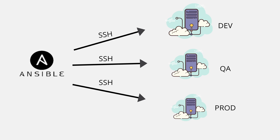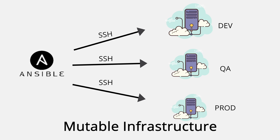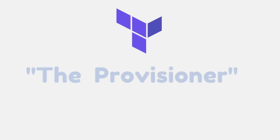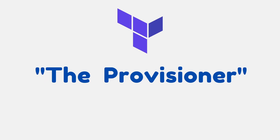Ansible fits very well in traditional automation, configuration management, deploying software, and deploying applications. Ansible is also more procedural. Looking at this diagram, if the servers are constant — meaning there are servers that exist without scaling in or scaling out — Ansible is very good at managing those servers. Ansible shines when you have immutable infrastructure.